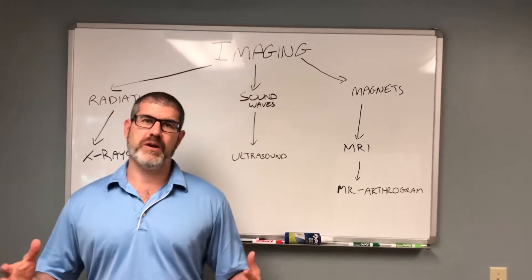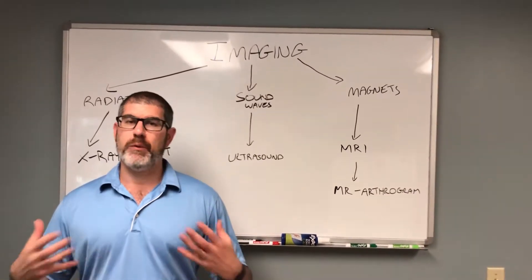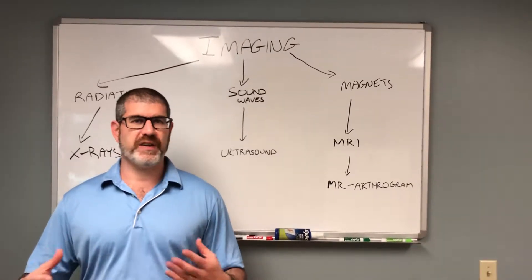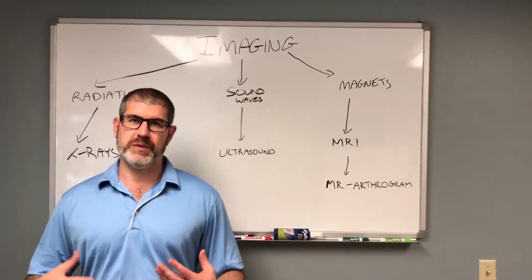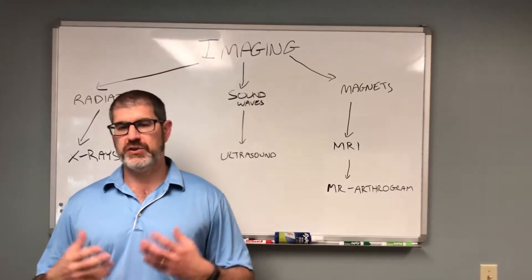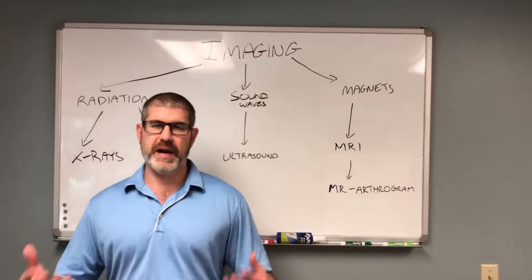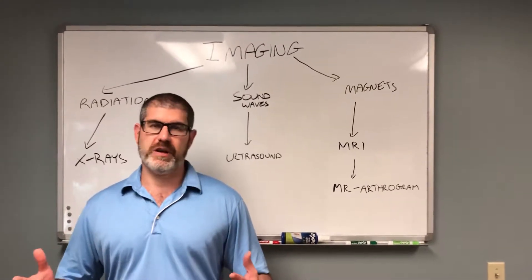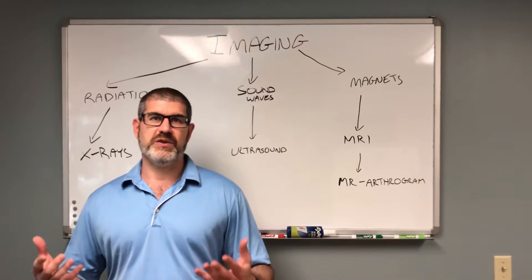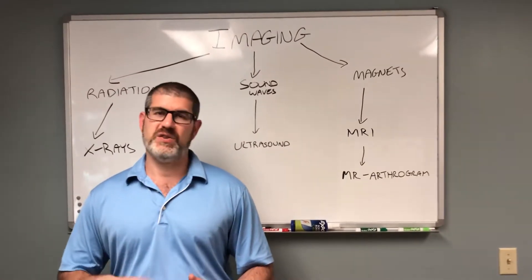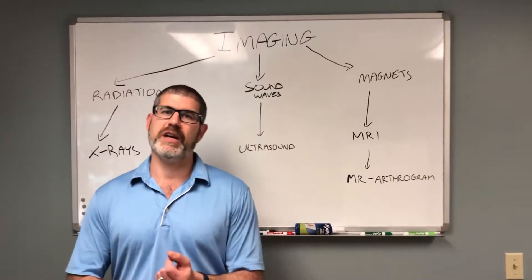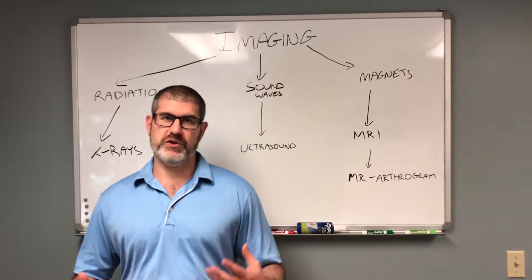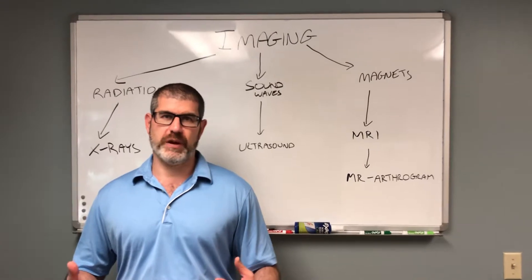Hi, it's Gary Chimes from Lake Washington Sports and Spine. What I want to go over today is a way to think about classifying different types of imaging that we use with musculoskeletal injuries. When we're seeing people with injuries — whether it's a spine issue, a shoulder issue, a knee issue, or a hip issue — we have a bunch of different imaging tools that we use. These include x-rays, CT scans, ultrasound, MRIs, and a couple of special variations. There's often a lot of confusion as a consumer about which of these tools is the right choice.